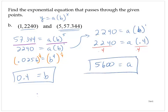Then write the model. y equals 5600 times 0.4 to the x. And again, we could check that if we wanted.